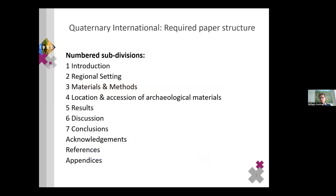One of the key things about Quaternary International is they very clearly state they want a particular paper structure with numbered subdivisions. So, it's good to get that right when you're setting out the paper from the very start. It's pretty straightforward: introduction, regional setting, materials and methods. They also have a section which you may or may not need relating to archaeological materials. If you don't have archaeological materials in your paper, then you don't need that section. Then results, discussion, conclusions, as you'd expect in a standard research paper.